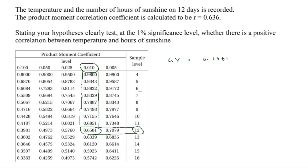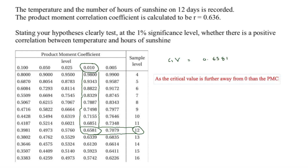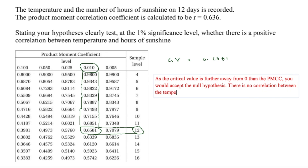Comparing the critical value of 0.6581 to the PMCC of 0.636, the critical value is further away from zero than the PMCC. Therefore we accept the null hypothesis — there is no correlation between temperature and number of hours of sunshine.